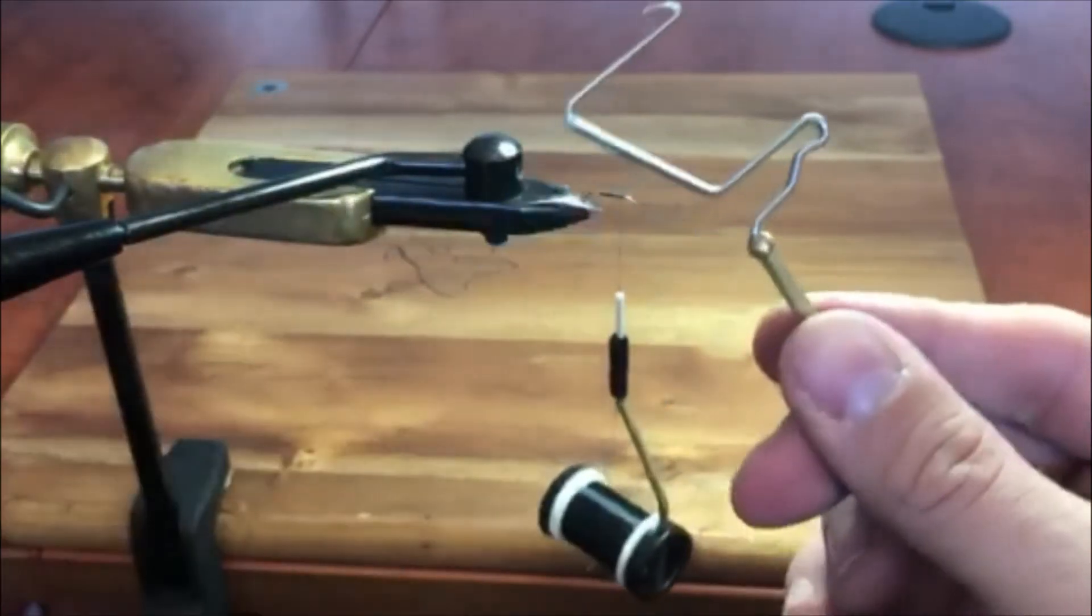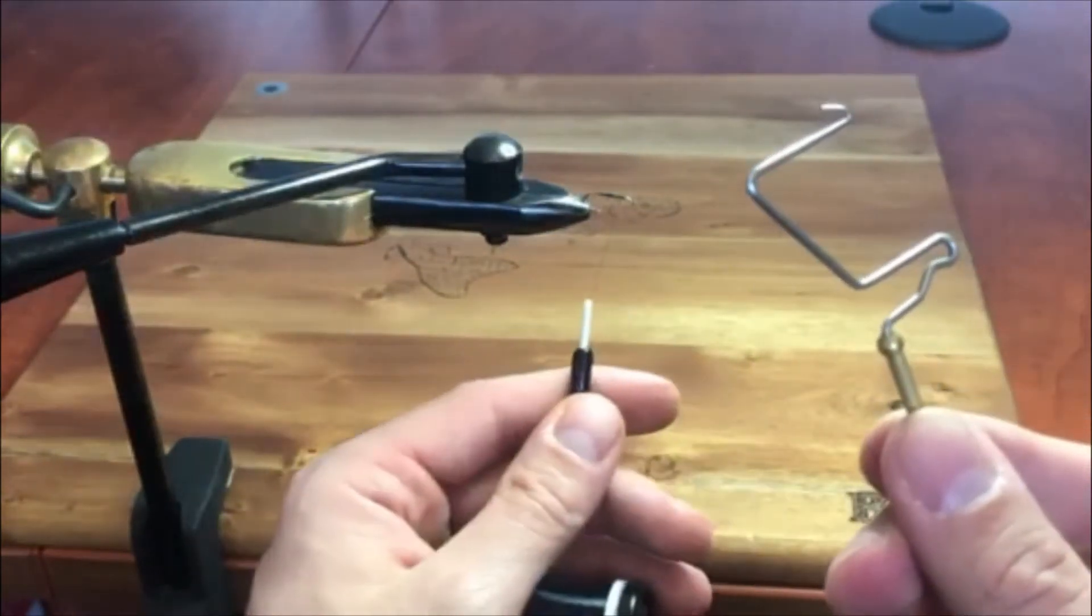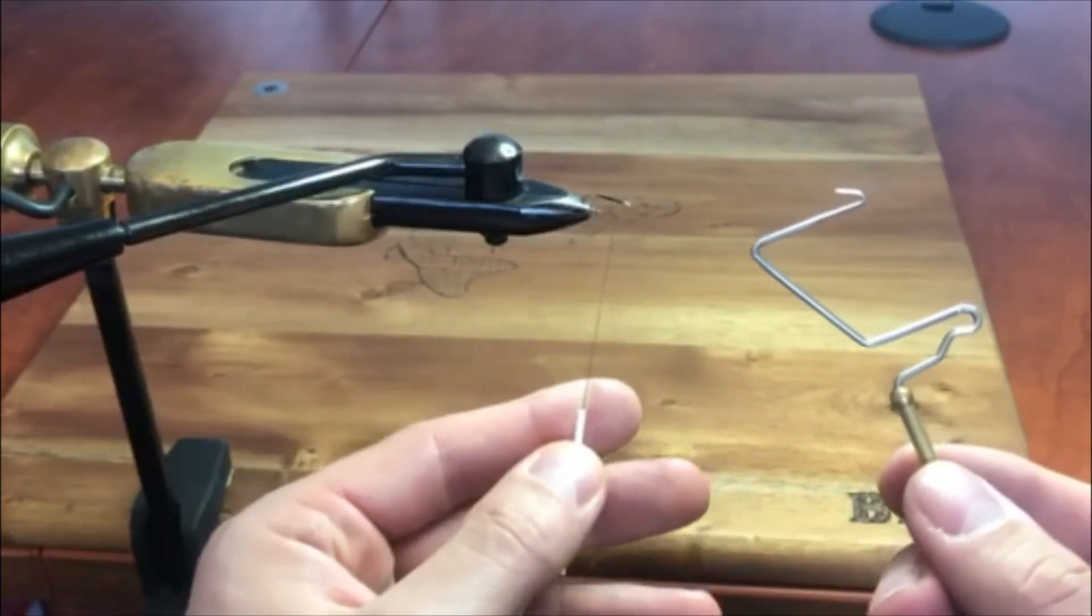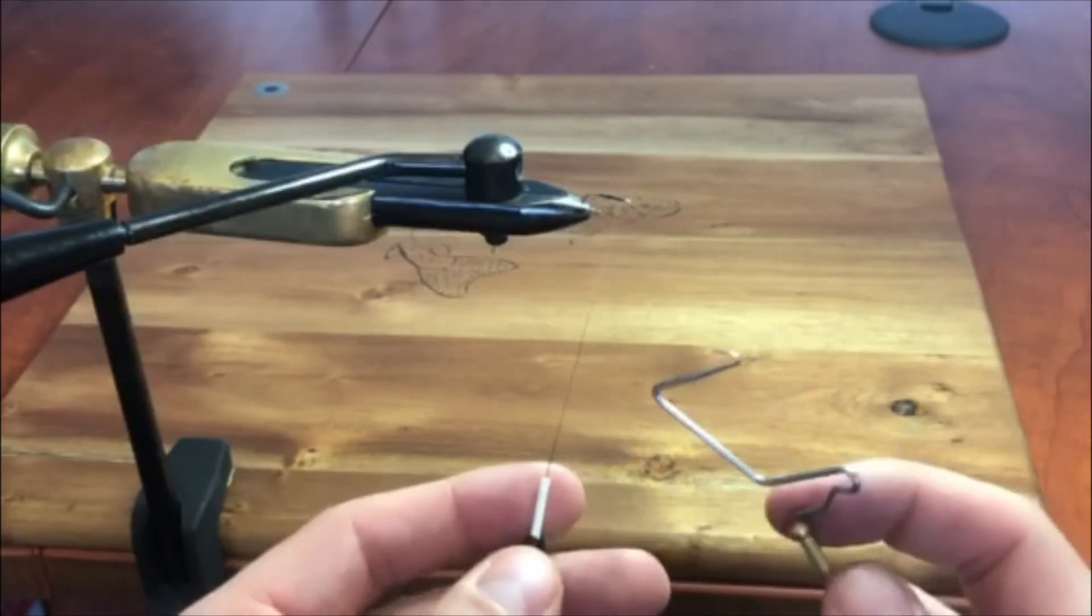Now I'm right-handed so I'm going to keep the whip finish tool in my right hand and grab the bobbin with my left. My first move is going to be to expose four to five inches worth of thread from the bobbin.